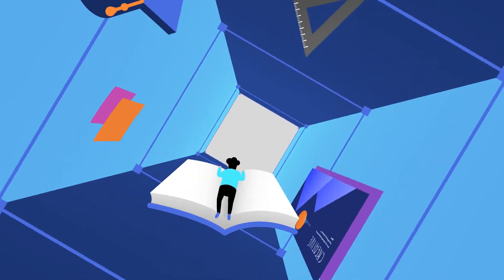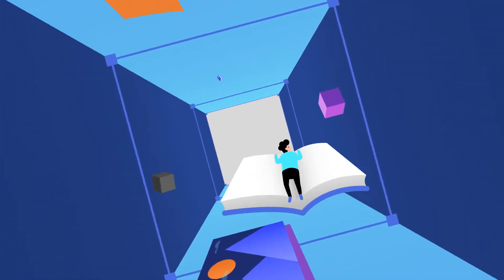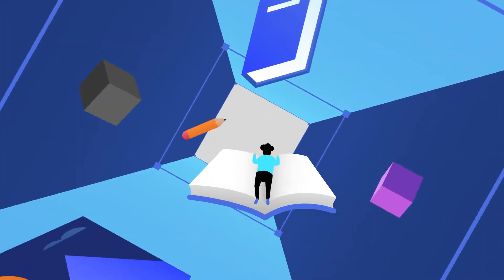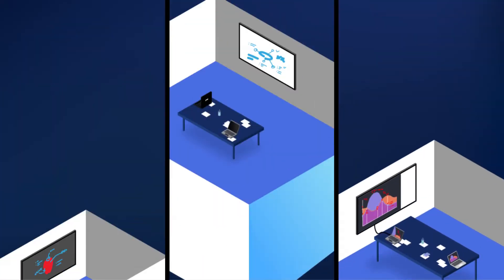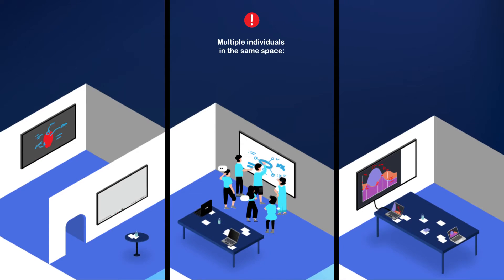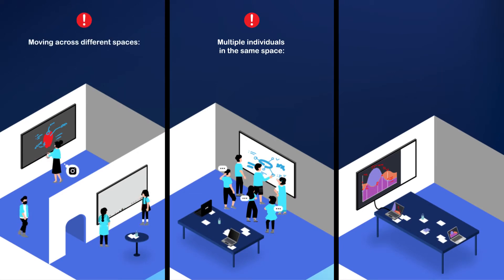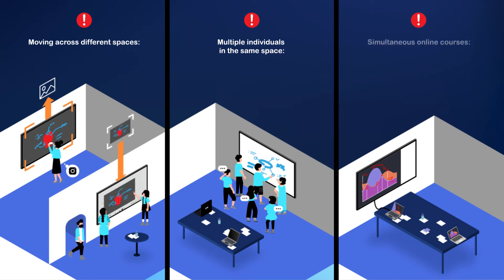Experiential learning often has lots of cross-space communication issues. In the same space, it's inconvenient for teams to collaborate simultaneously. When moving to other places, the file can't keep editing. In an online live course, users can only interact through annotations.